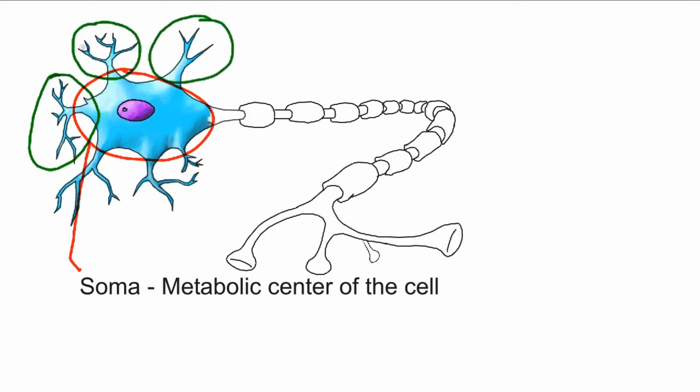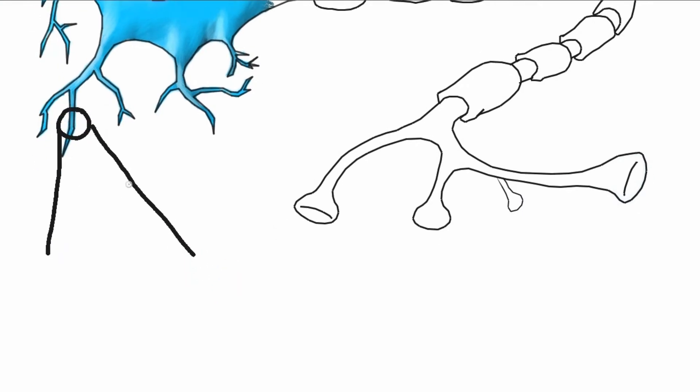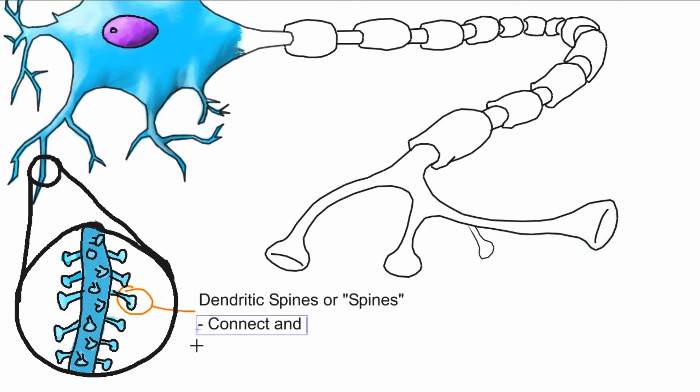See all these structures extending out from the soma? They're called dendrites. These dendrites are what receive incoming signals from surrounding neurons. Now if you look even closer at these dendrites, you'll notice tiny little structures called dendritic spines. These spines sort of help connect the nerves together.